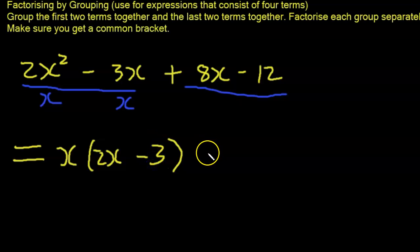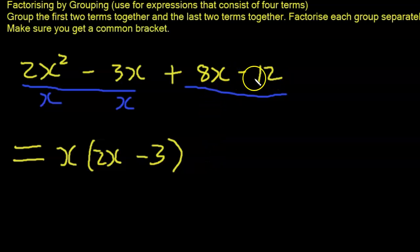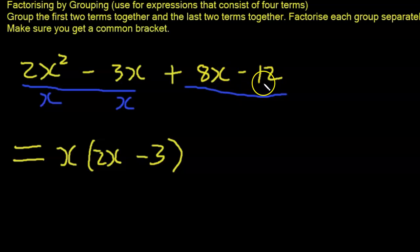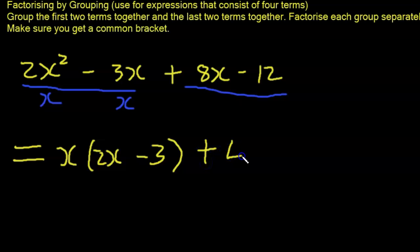Now for the other pair of expressions: the highest common factor for 8 and 12 is 4. The x is not common, so the common factor is just 4. Now we need to determine what to put inside the bracket for this group.